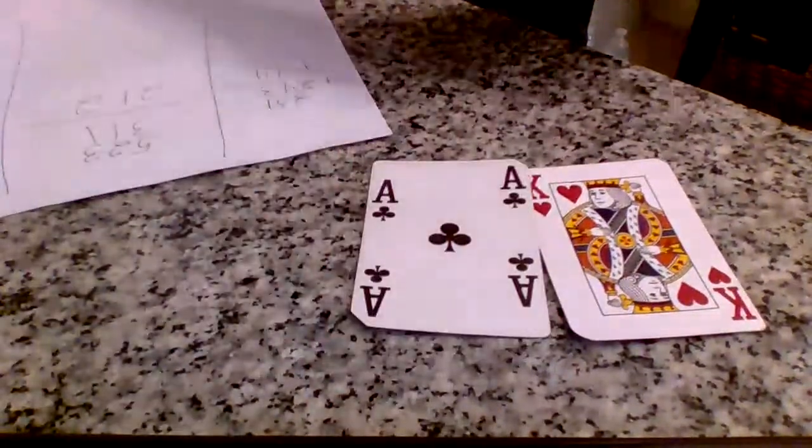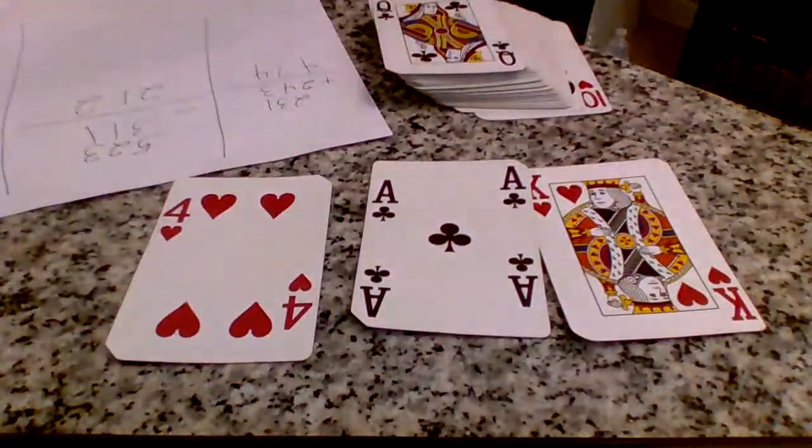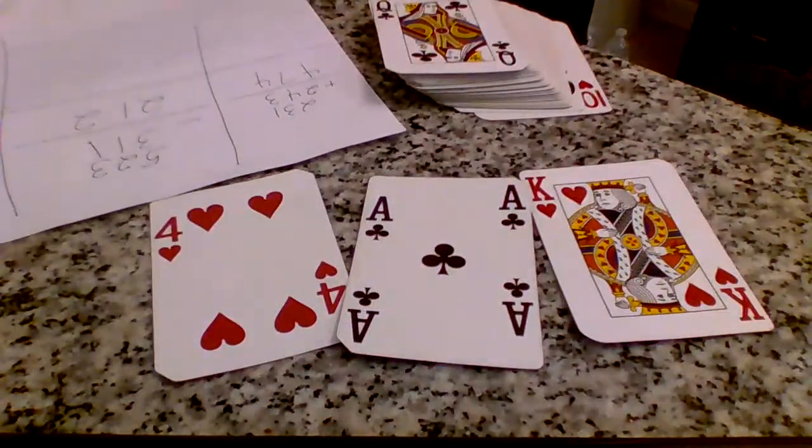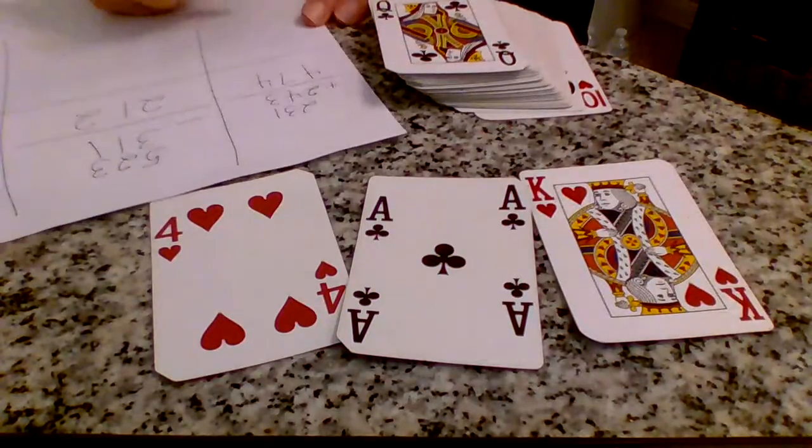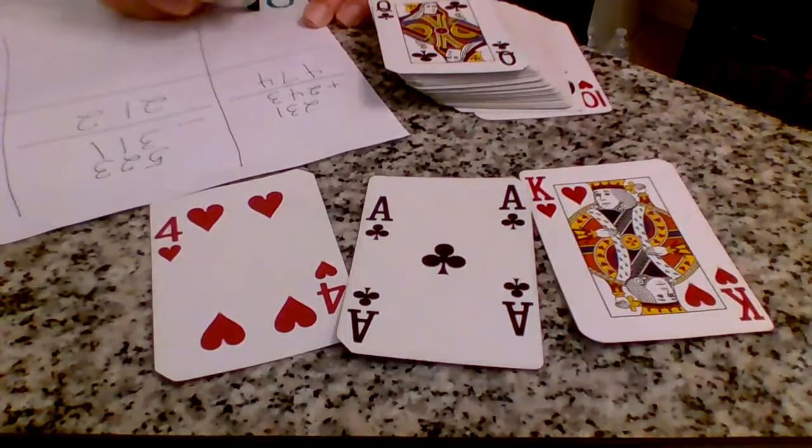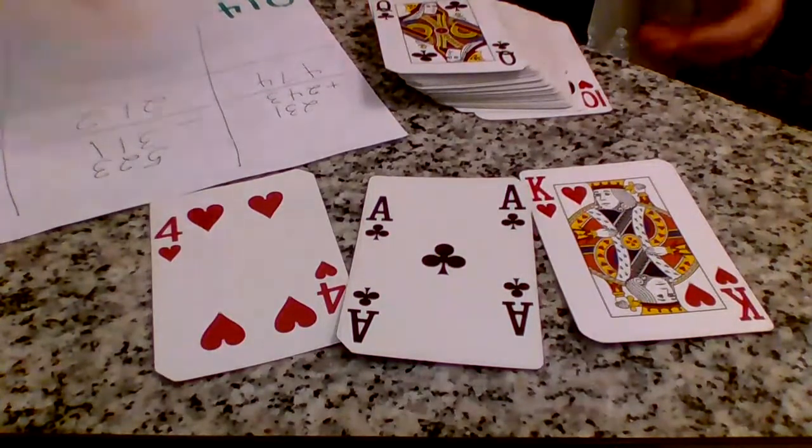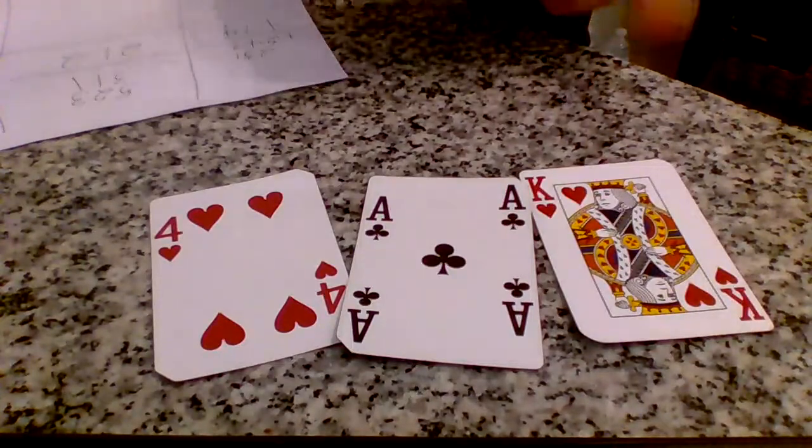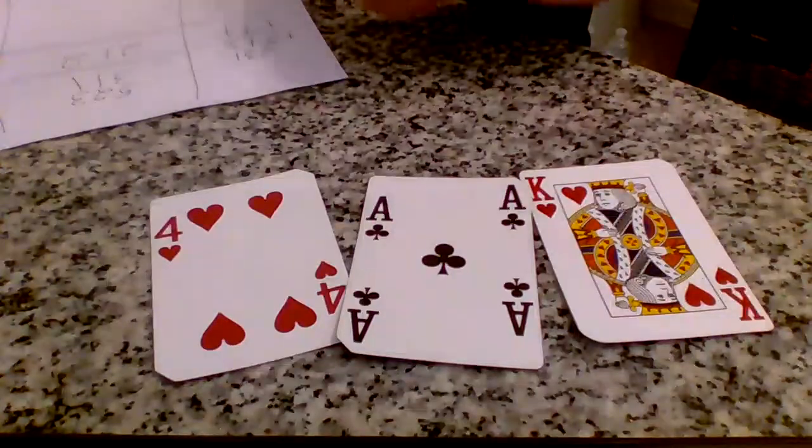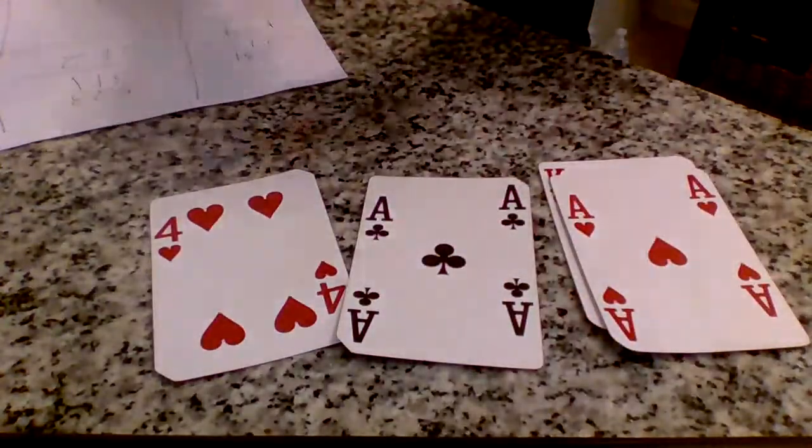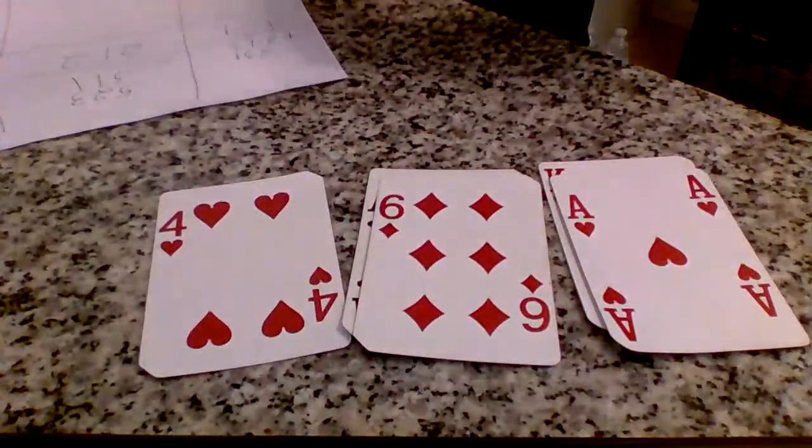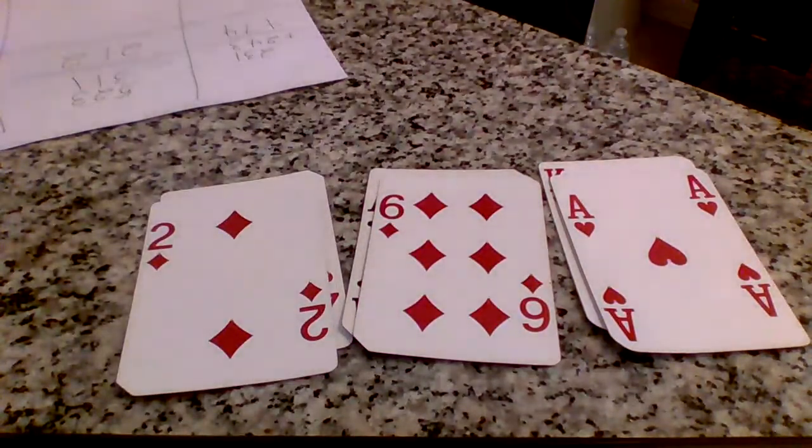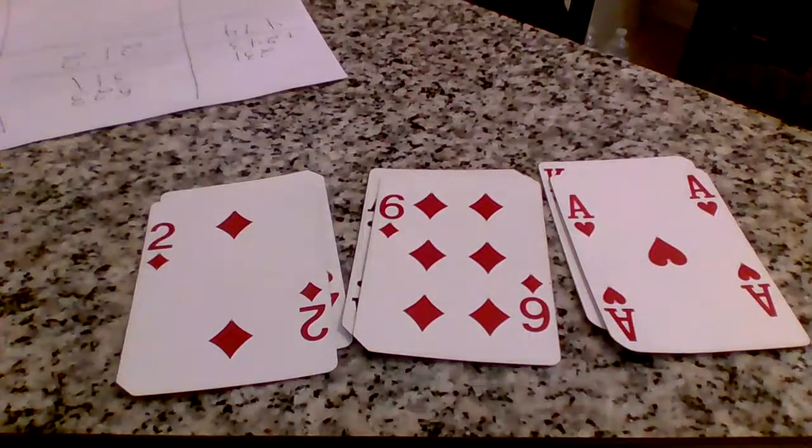Again I'm adding, so I've got 014 plus, let's see, plus 162. Remember aces are ones, face cards are zero. That was 162.